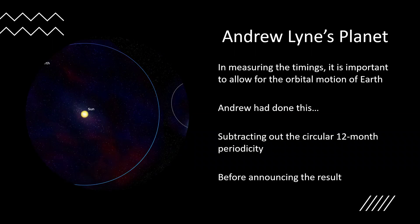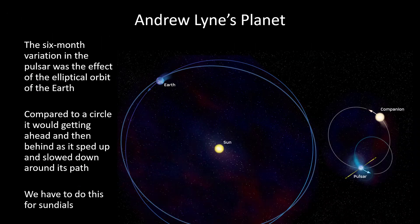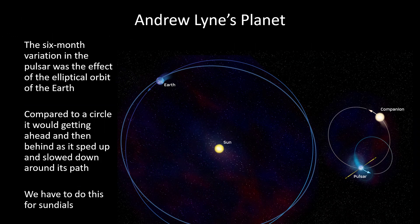However, in doing these measurements you have to correct for the motion of the earth. The earth goes around the sun in 12 months, and so the wobble of the pulsar is combined with the to and fro motion of the earth. So you have to subtract this out, and Andrew had indeed done this before dealing with and announcing the result.